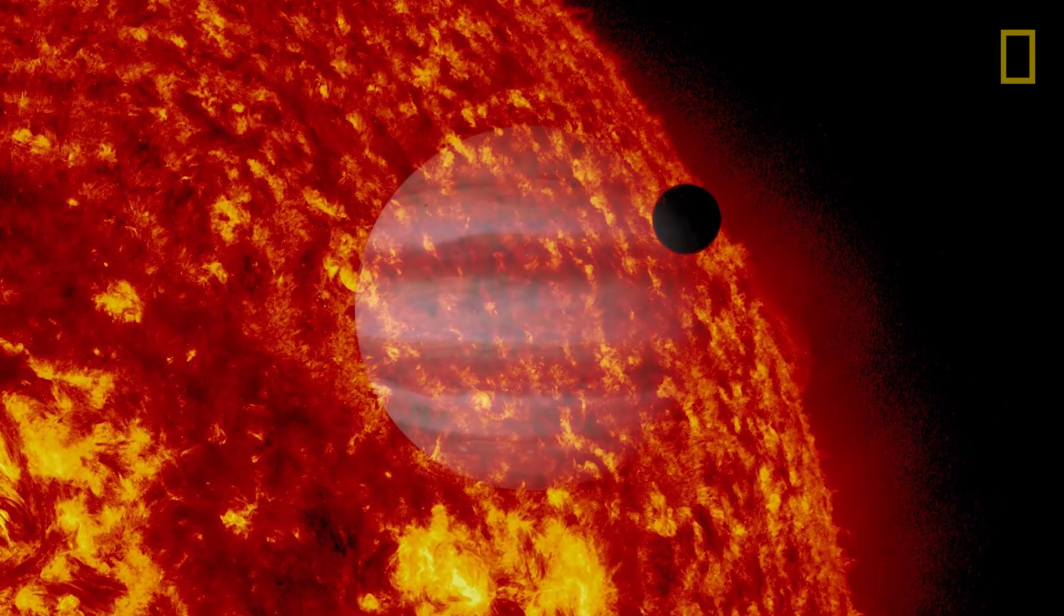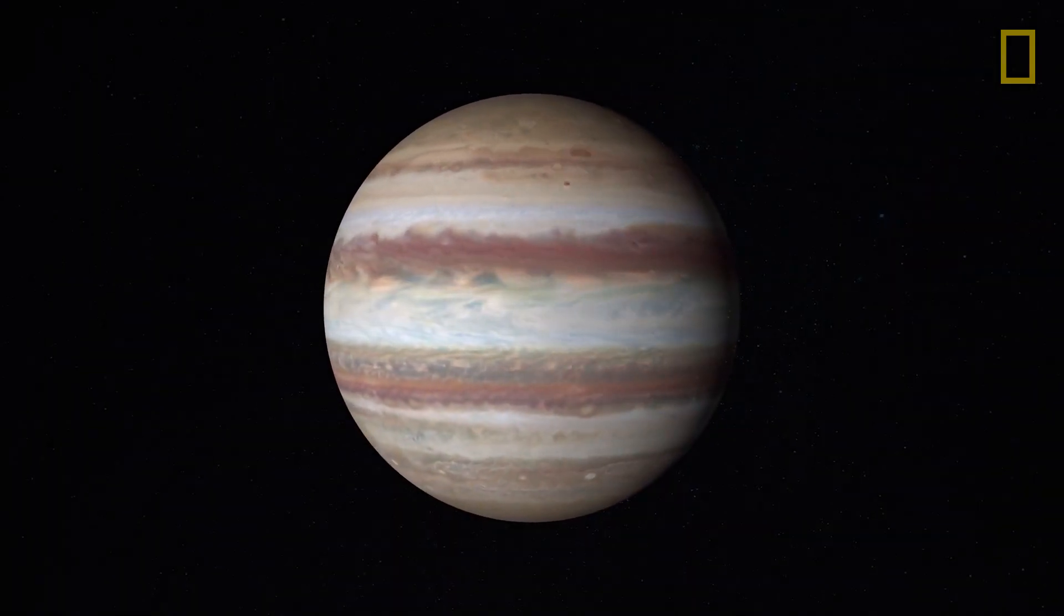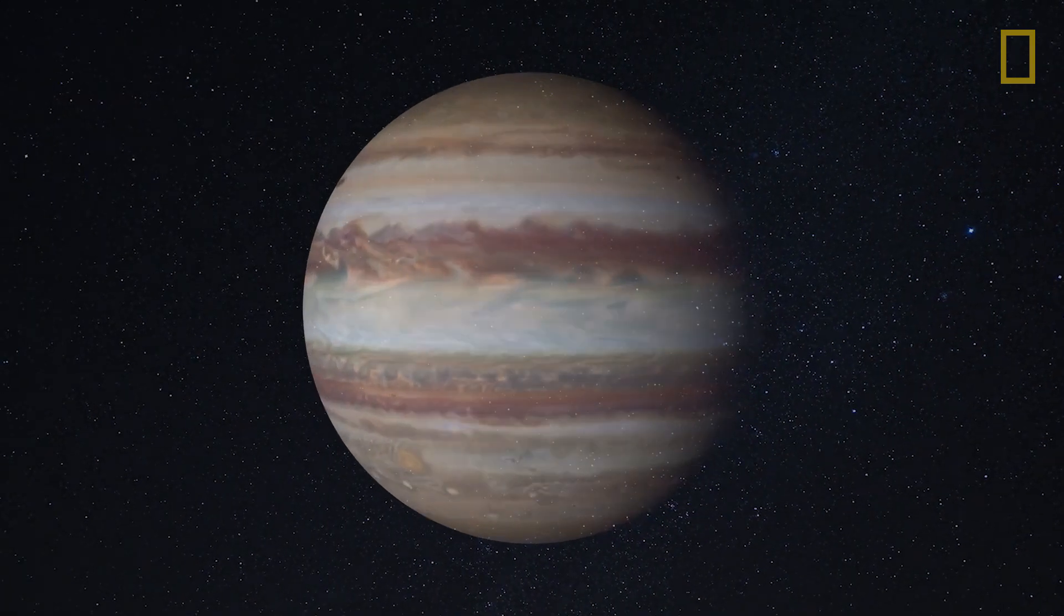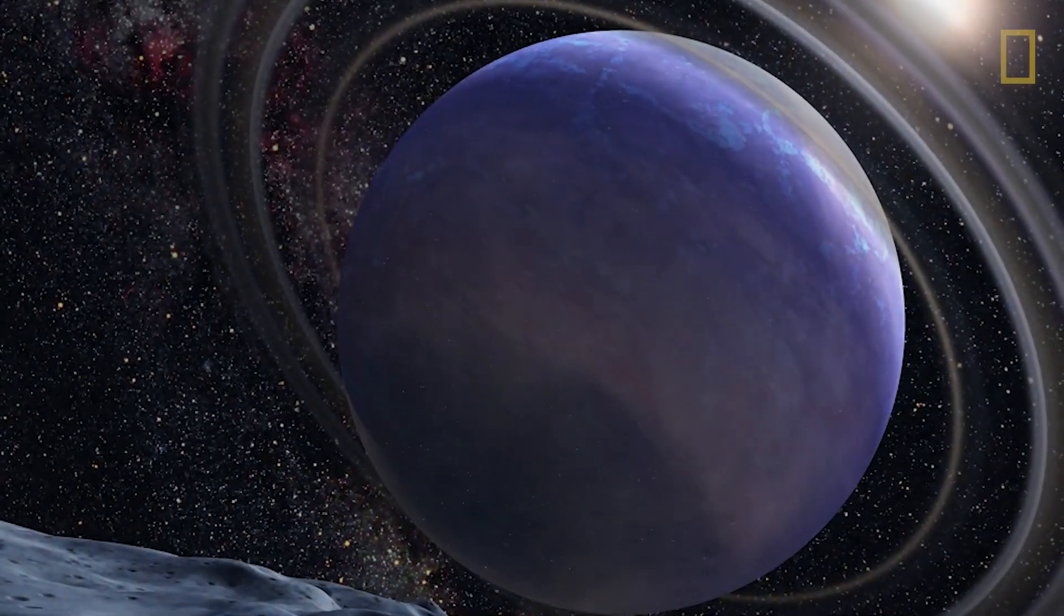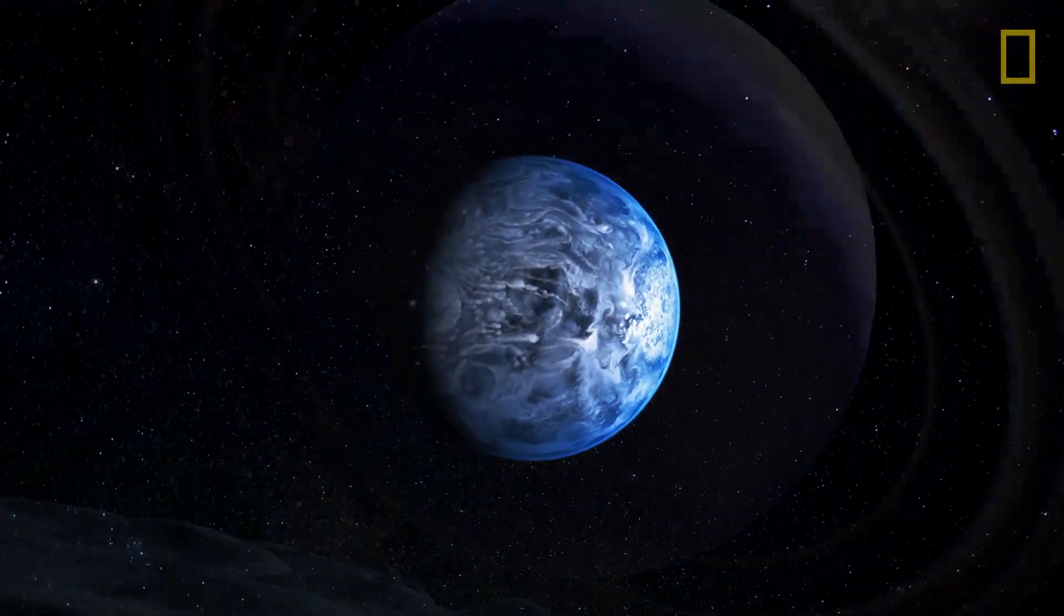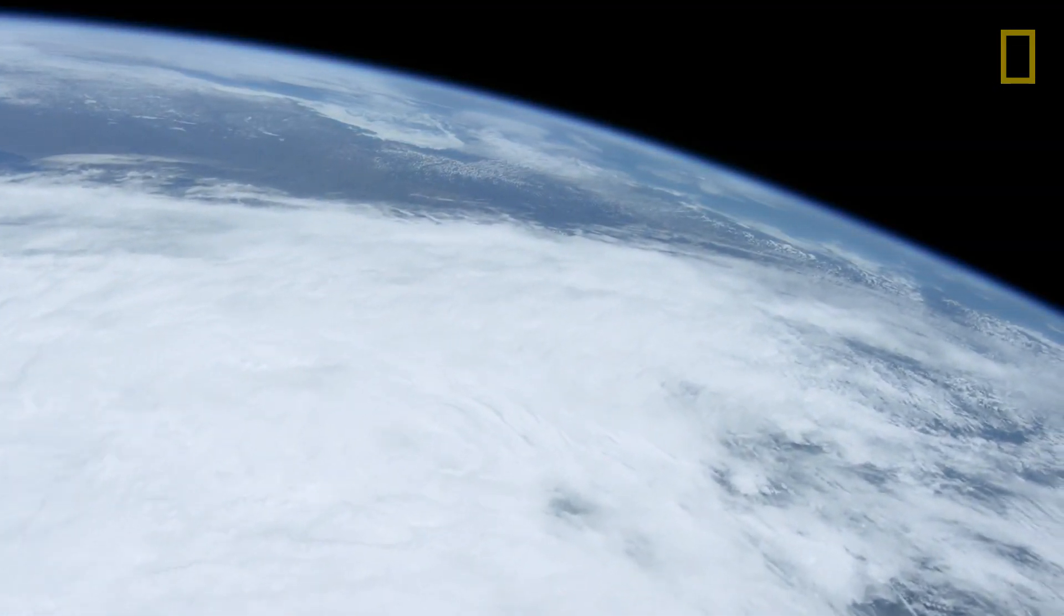We've discovered exoplanets that are similar to our own solar system's Jupiter, but very close in, so they're hot. We've discovered icy worlds, rocky worlds, and we've even discovered that exoplanets have atmospheres like our own Earth.